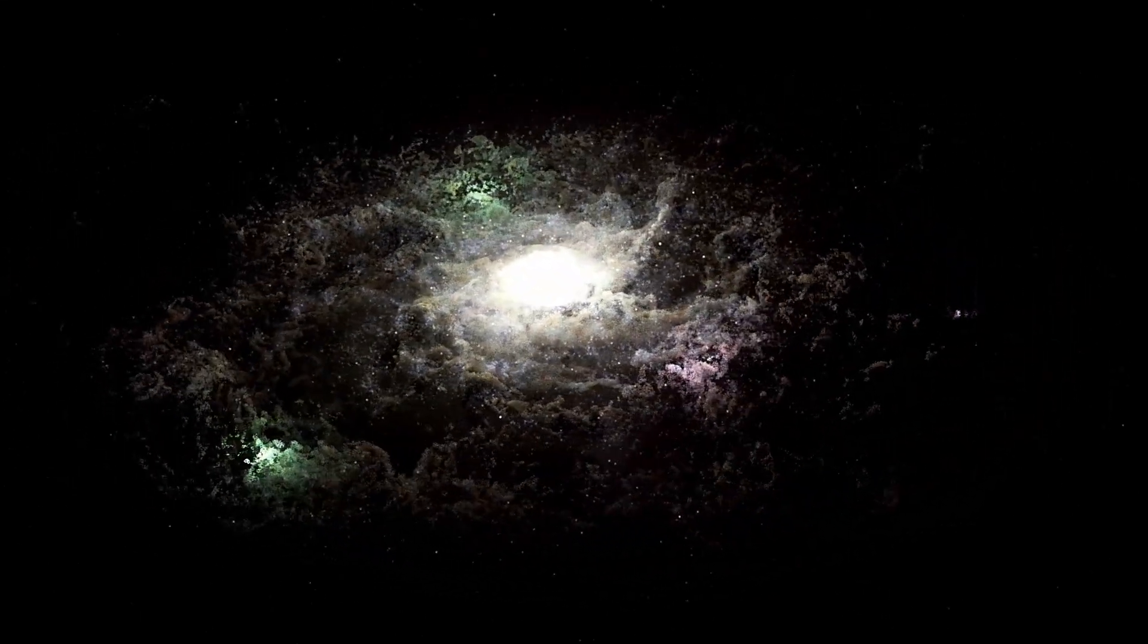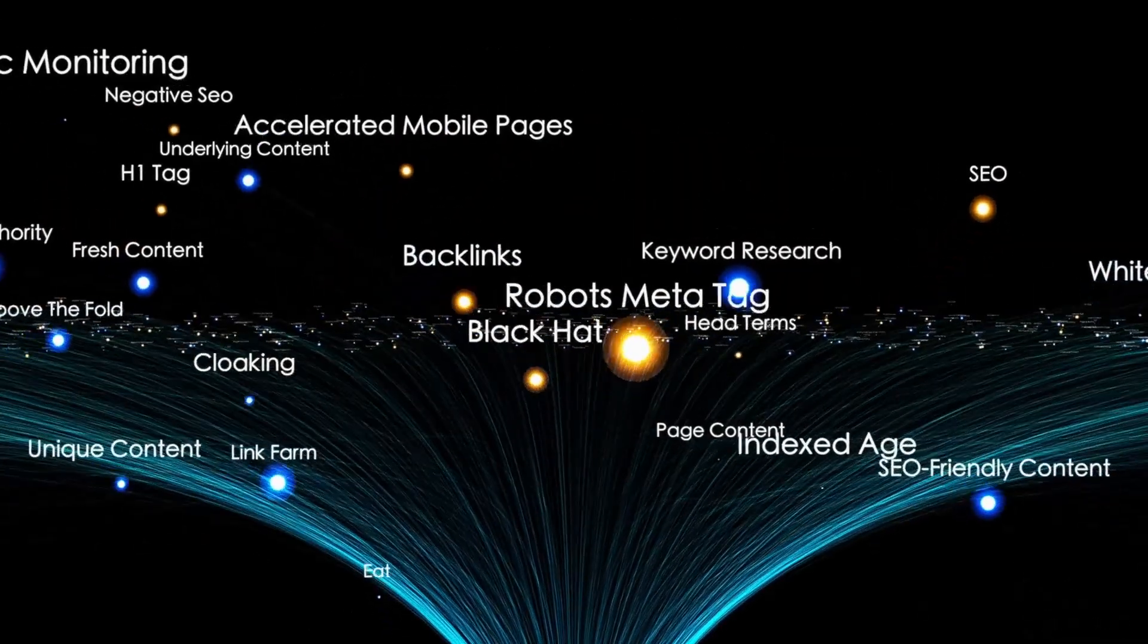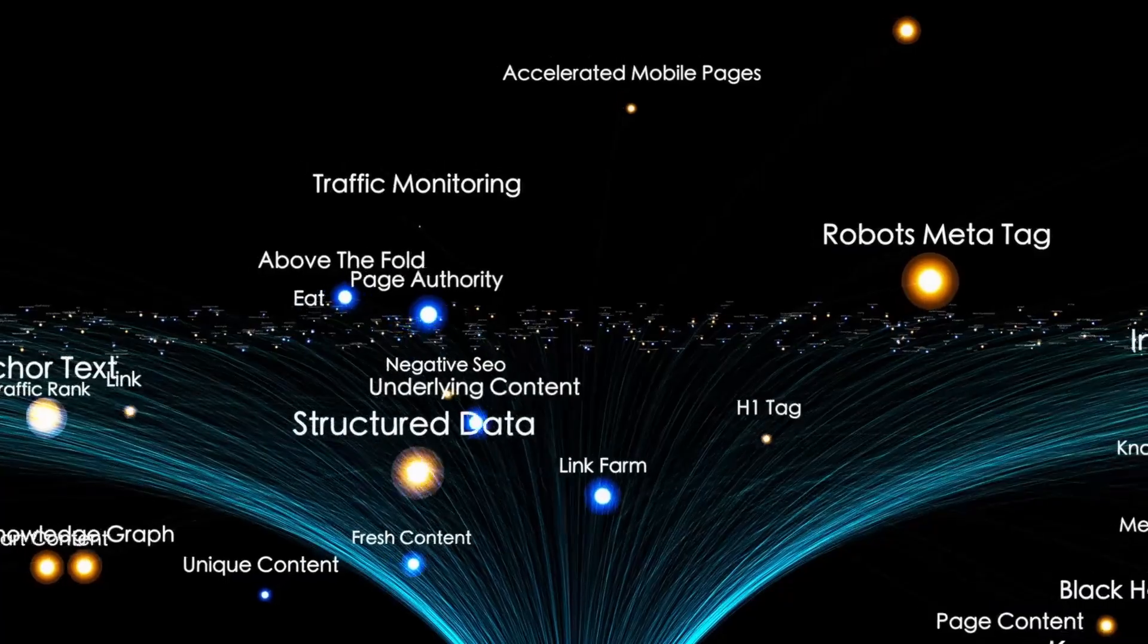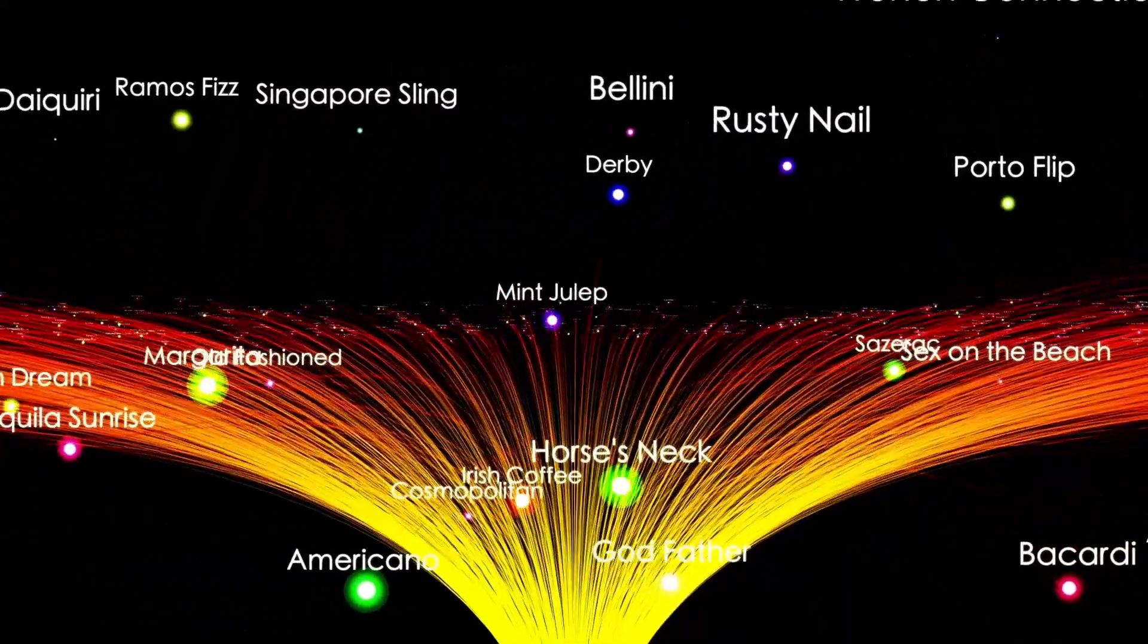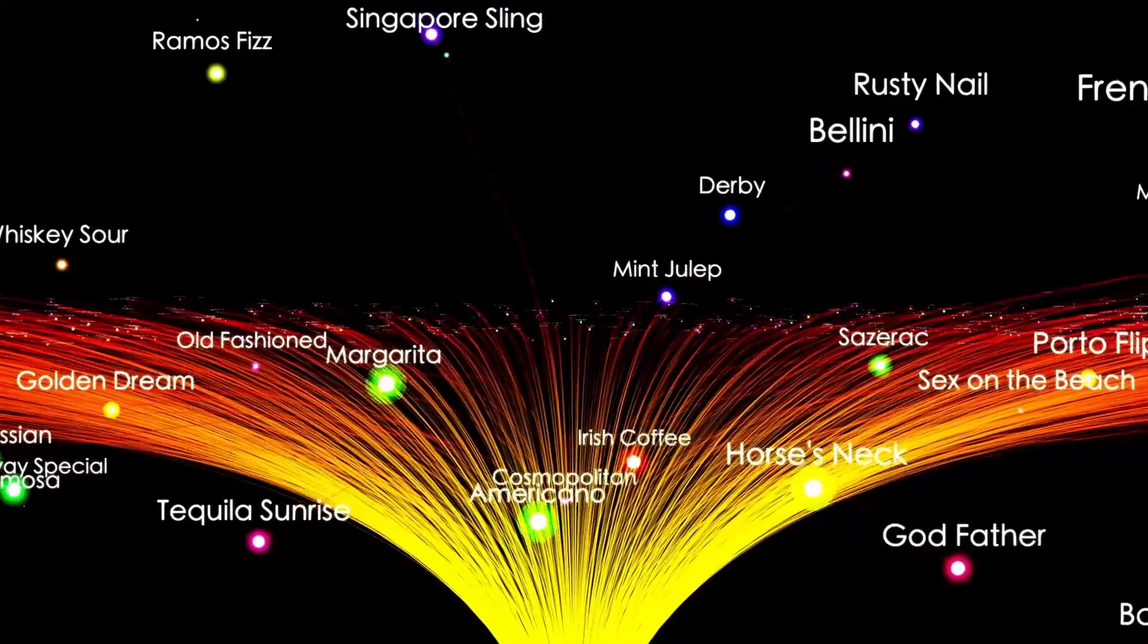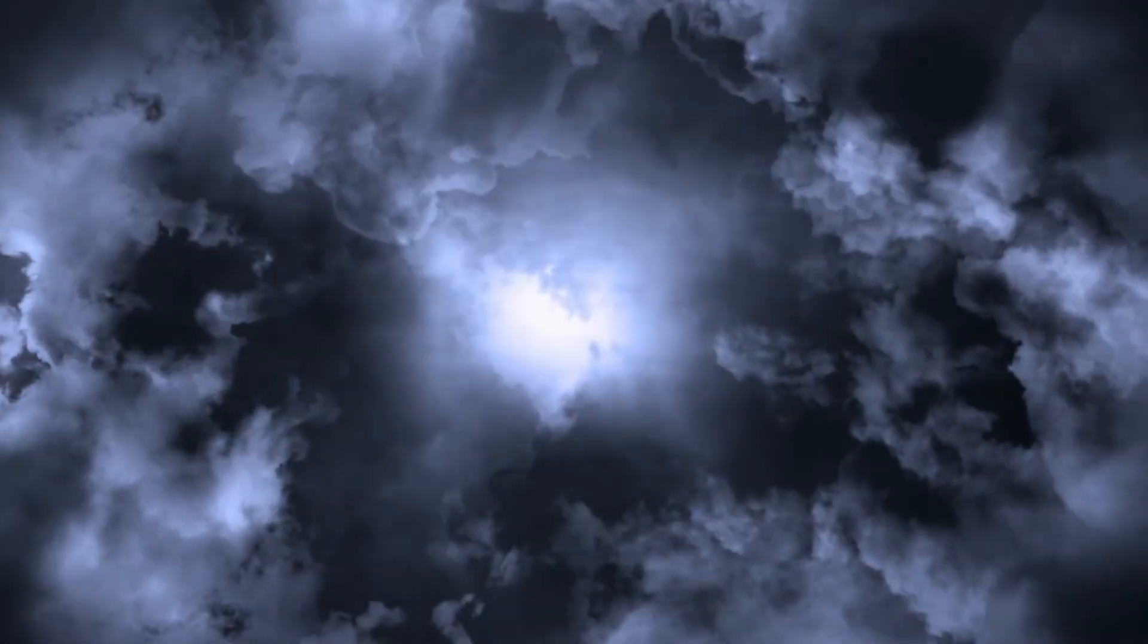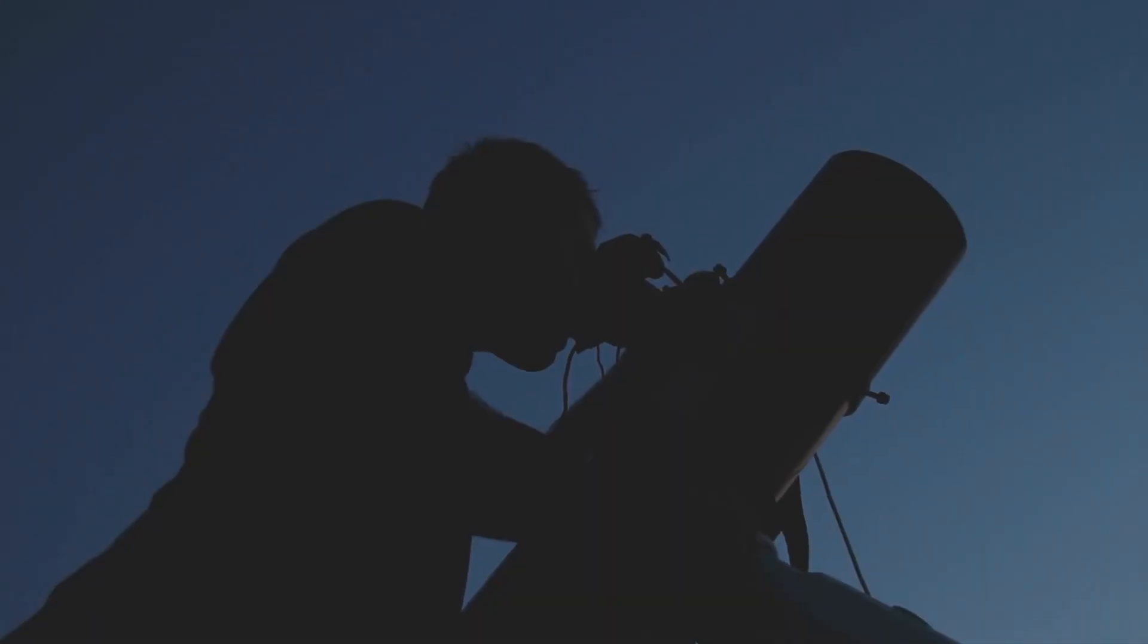But here's the thing. That explanation doesn't totally make sense. First off, the signal came from a very specific point in the sky, right where Proxima Centauri is. Most radio interference from Earth shows up all over the place, or repeats in different parts of the sky. But this one was focused, and it didn't pop up again during follow-up observations. That's weird. If it were truly just human-made interference, why did it seem so directed? And why did it only show up once?